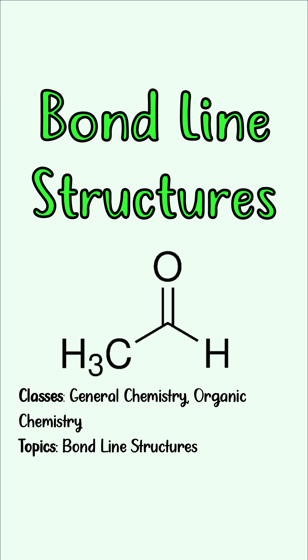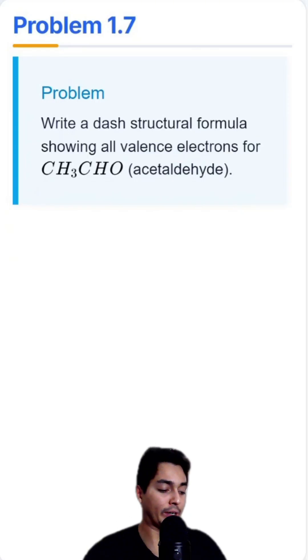Play this on repeat until you master this problem on bond line structures. So here we have CH3CHO and we're going to use these clues, namely we have a carbon next to three H's right here.